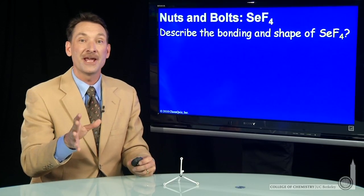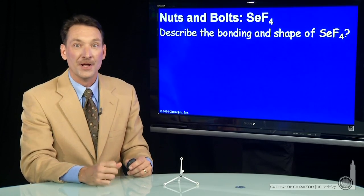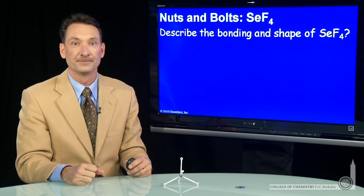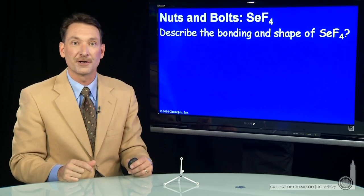Let's describe the bonding and the shape in SeF₄. In order to do that, you need to start with a good Lewis electron dot structure. So you have to be very good at drawing your Lewis electron dot structures.